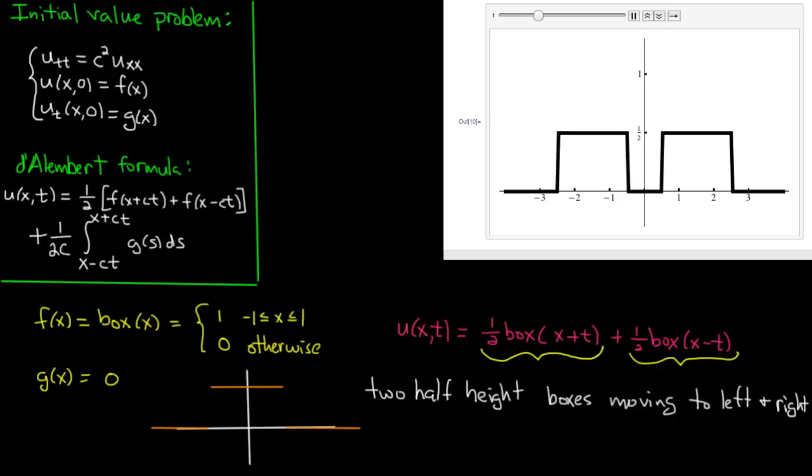Now if you think about it for a minute, you'll realize that the fact that I used a box function here is really just irrelevant. If g is 0, then the d'Alembert solution will just be this one-half times the combination, the sum of the two f's, one moving to the left and one moving to the right. So really, whatever initial profile I start out with, when I let the wave equation do its work, I'll just see two half-height f's moving apart in different directions.